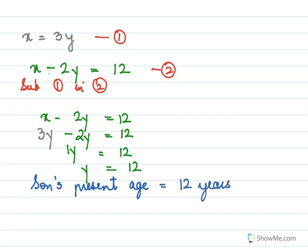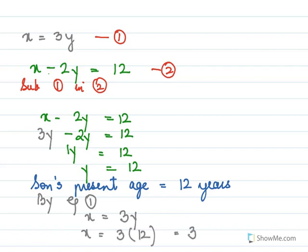By equation one, x equals 3y, which means x equals 3 times 12, so x equals 36 years. The father's present age is 36 years.